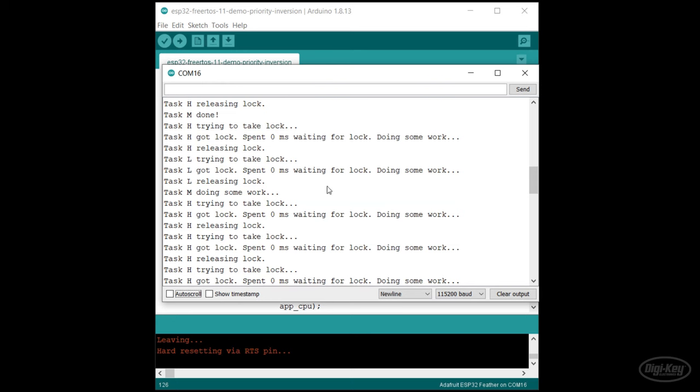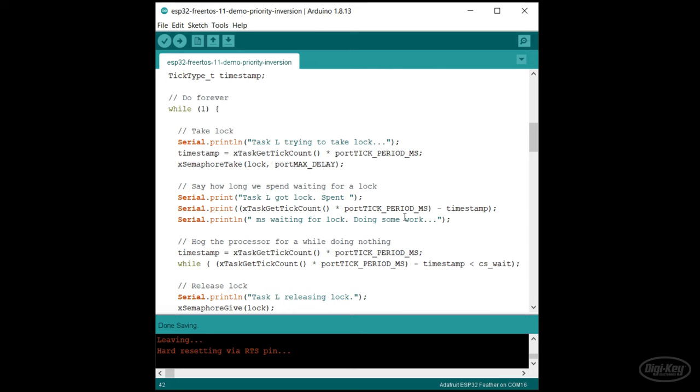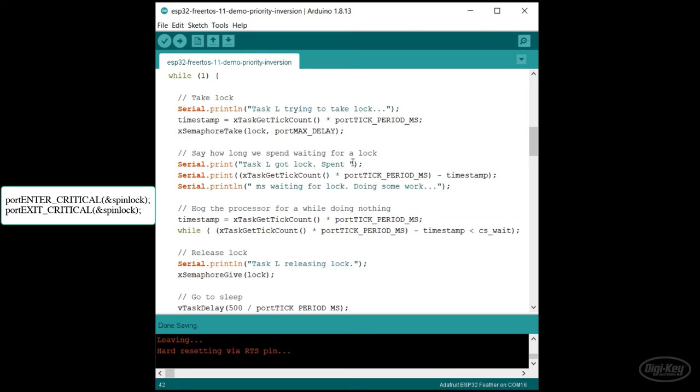Now it's time for your challenge. Start with the priority inversion code and protect the empty while loops using critical section markers instead of a mutex. Note that with the ESP32, you'll need to use port enter critical and port exit critical with a spin lock. We don't see any of the tasks wait for the spin lock because these critical section markers actually disable the scheduler and interrupts for that core. This may or may not be a desired effect, so think carefully about which route you want to take to avoid priority inversion in the future.